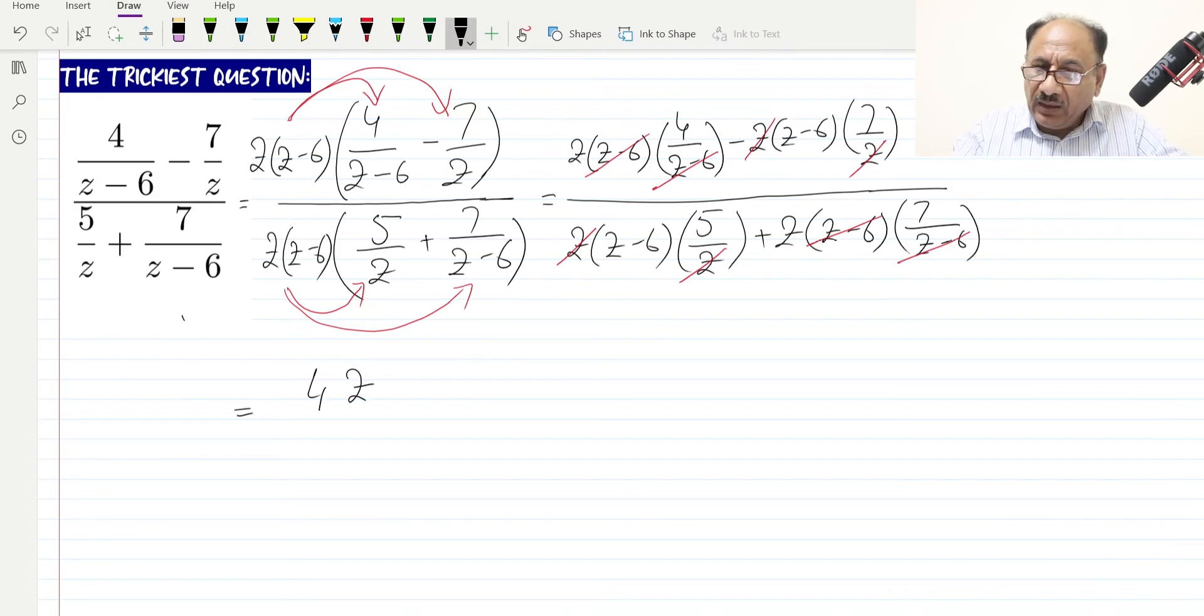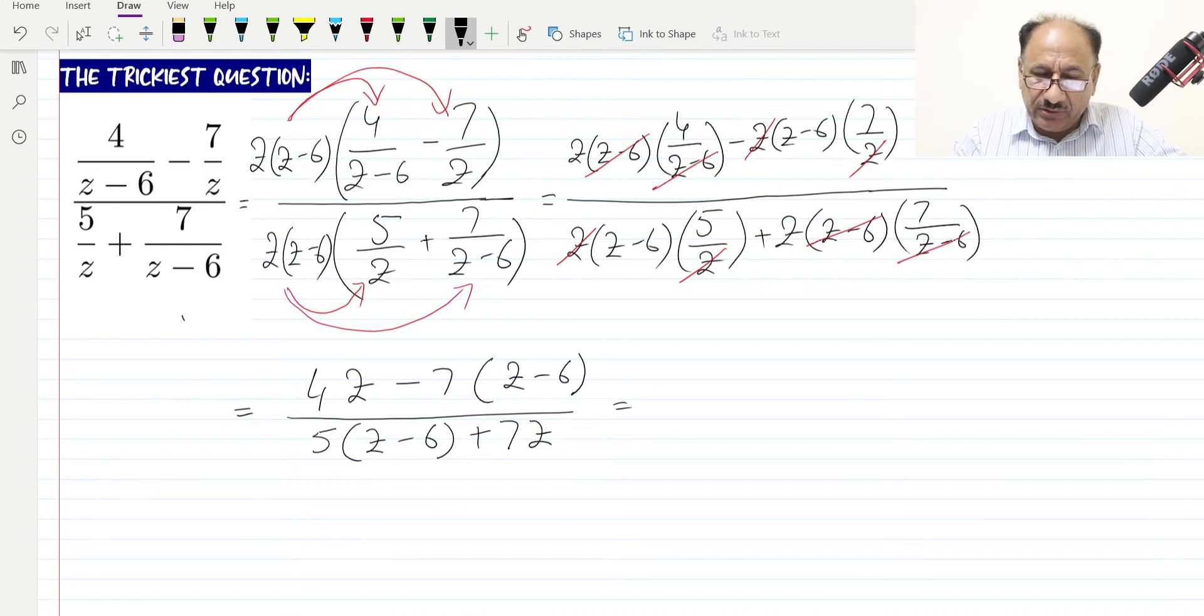The denominator will be 5 times z minus 6 plus 7z. The next step will be opening up brackets. Step by step, we are following the procedure. Don't miss steps, otherwise you will be committing more mistakes.